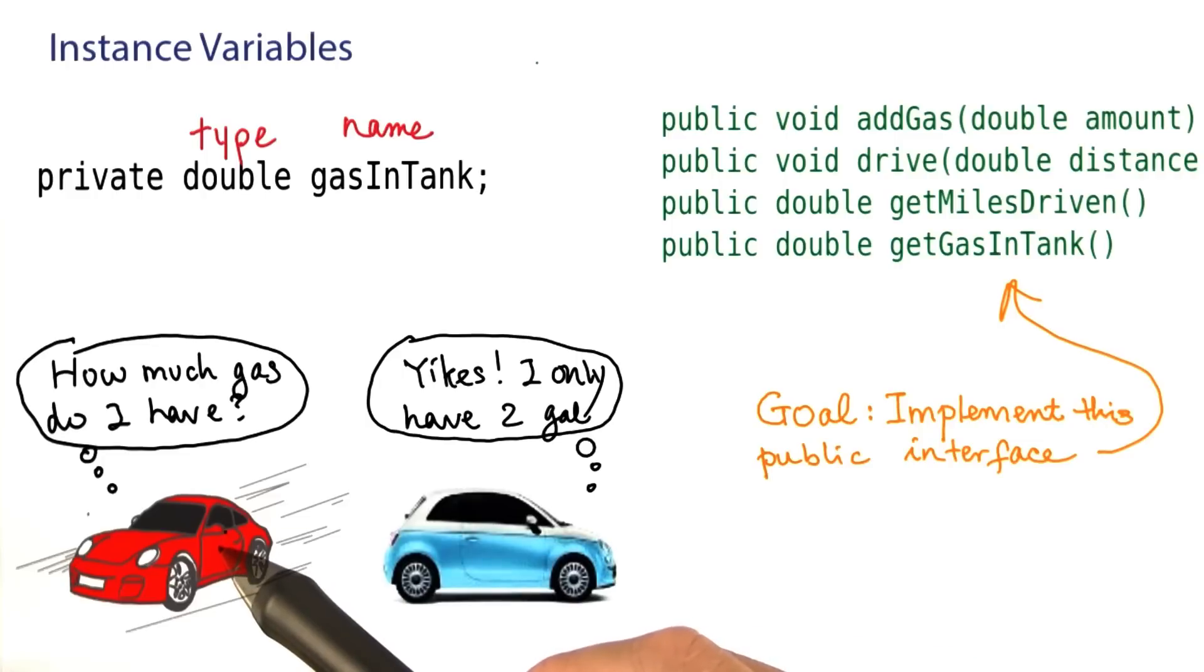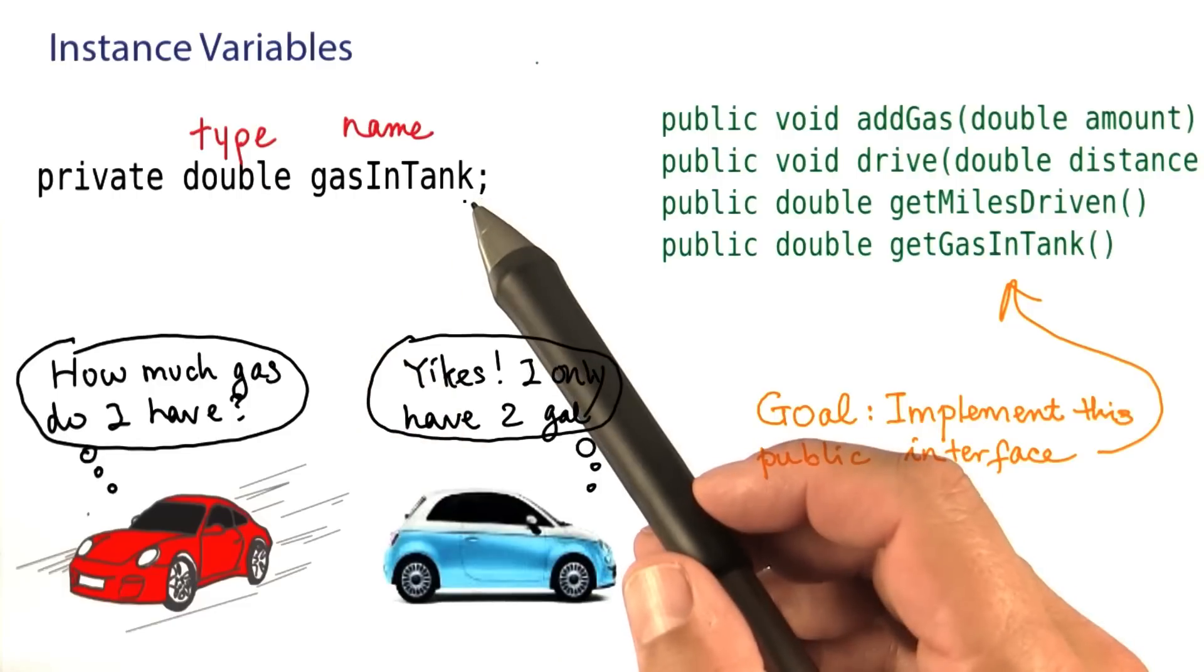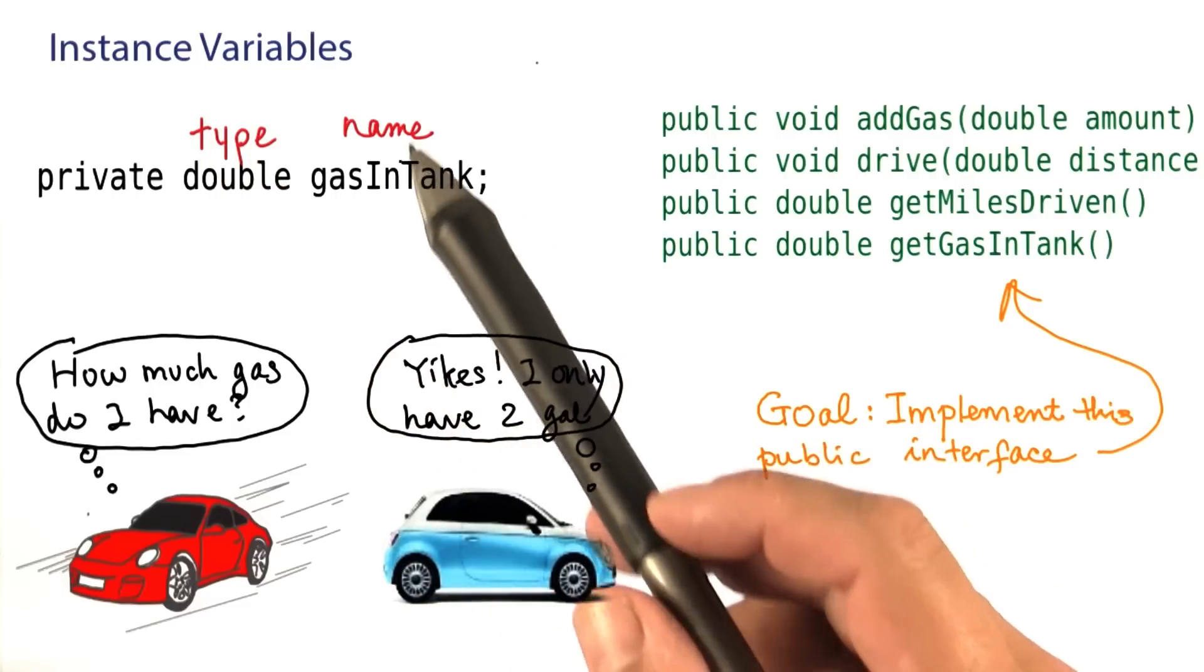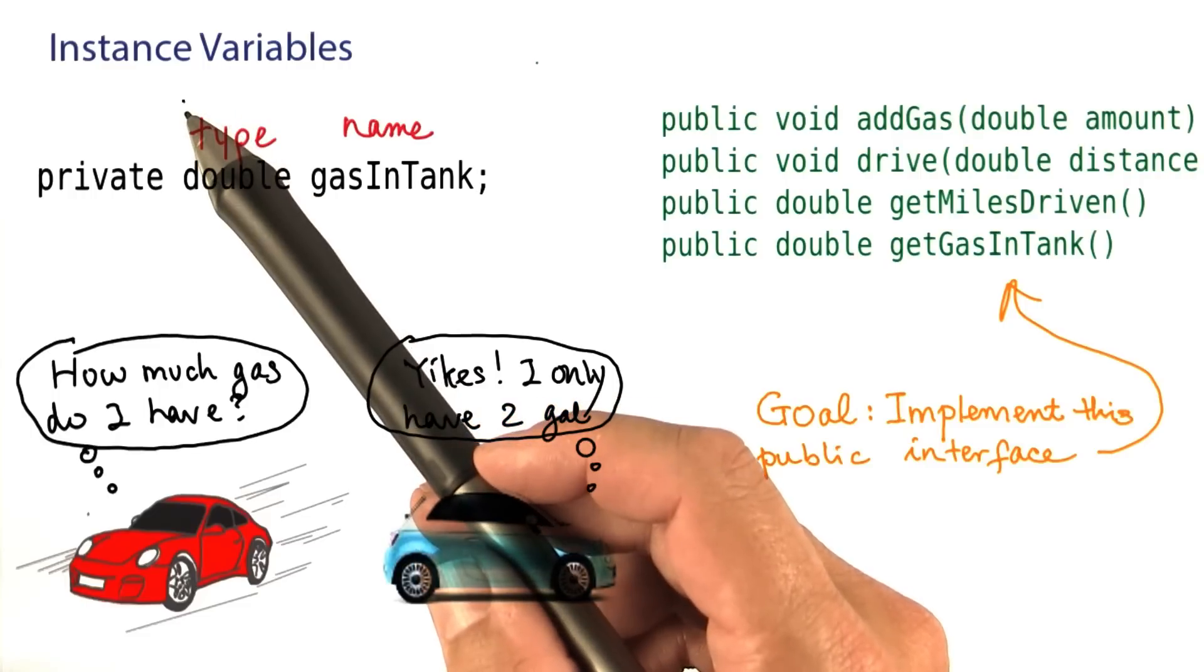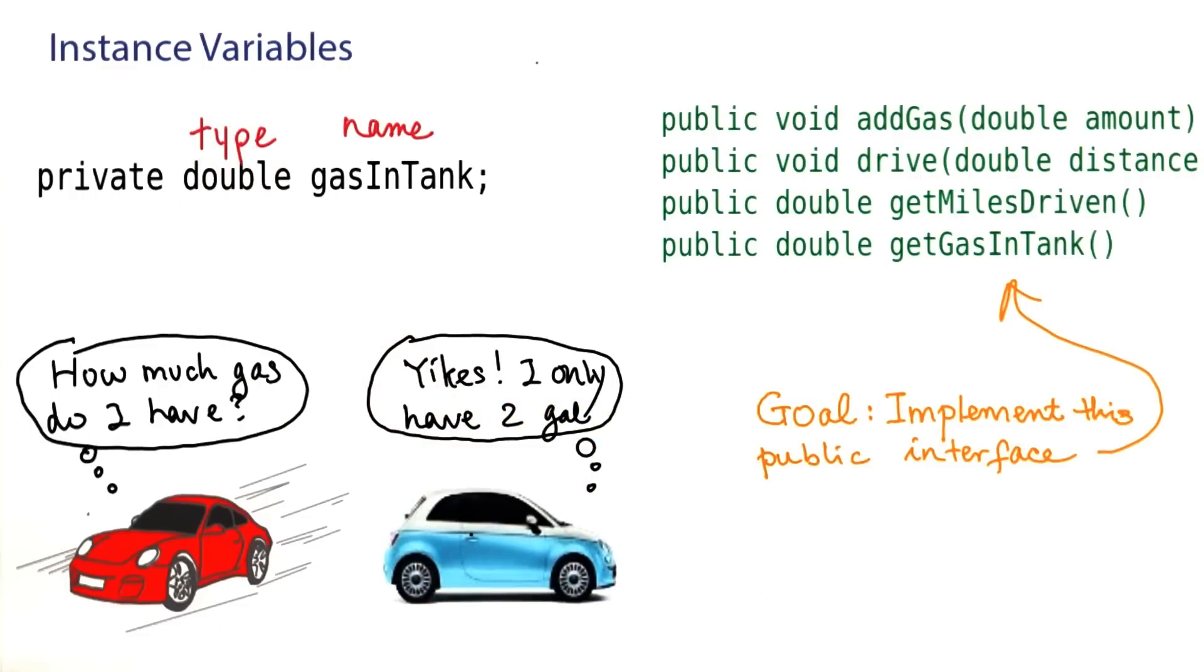So each of these objects, or each of these instances of the car class, needs to have its own variable to store that information. That's what it means to be an instance variable. It's a variable that occurs in every instance of the class.